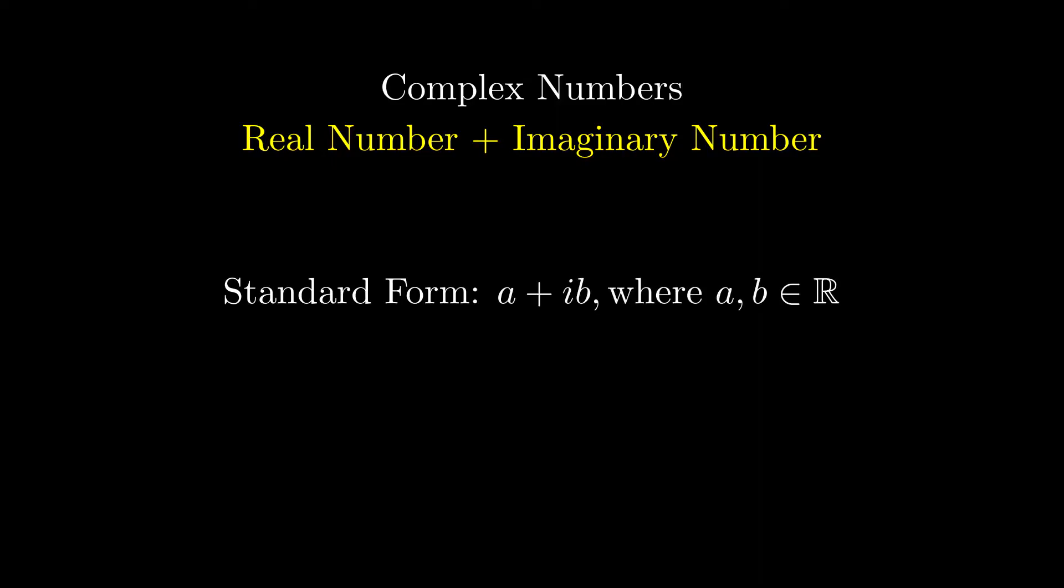Now we move one level up to complex numbers. A complex number is a number that contains a real number plus an imaginary number. A standard complex number looks like a plus ib, where both a and b are real numbers, a being the real part of the number, and ib being the imaginary part.